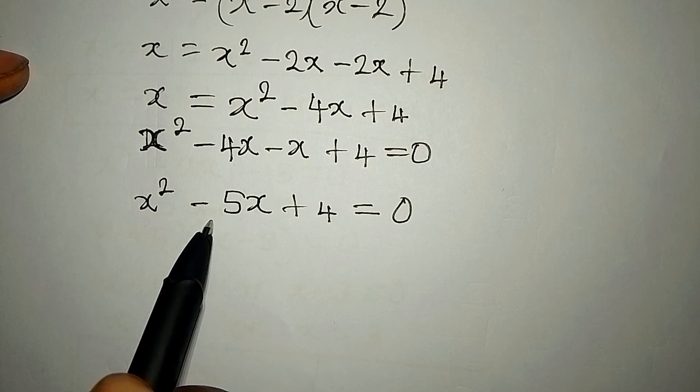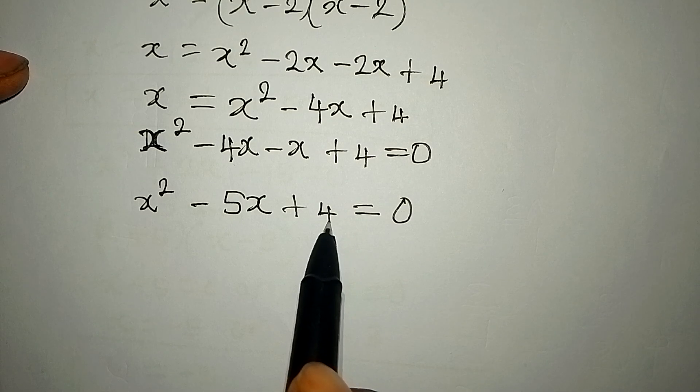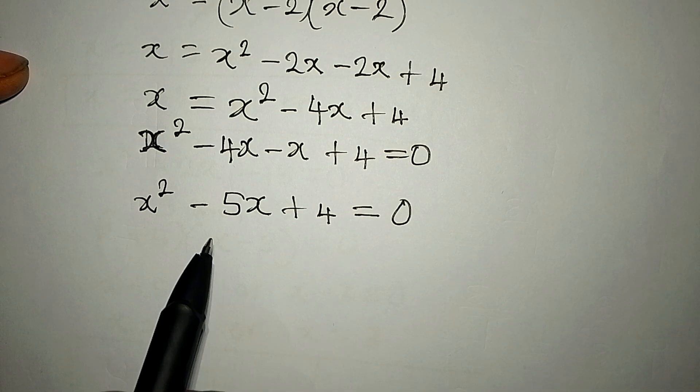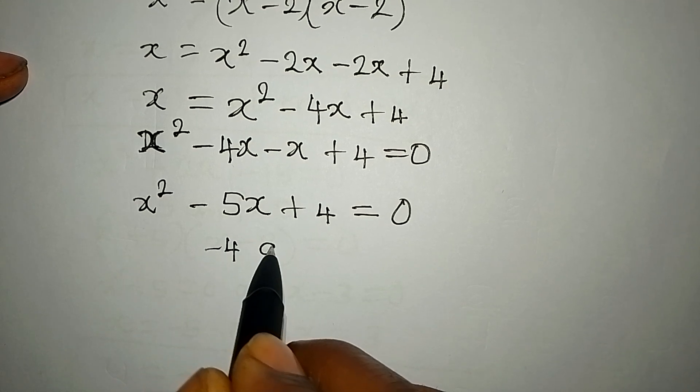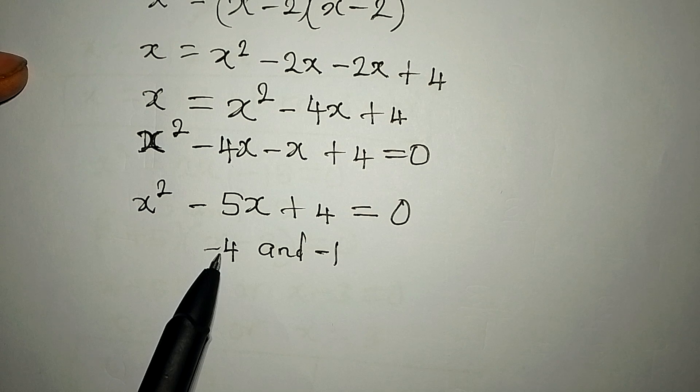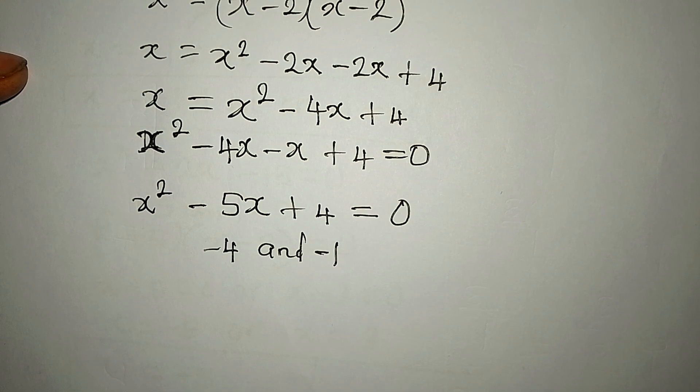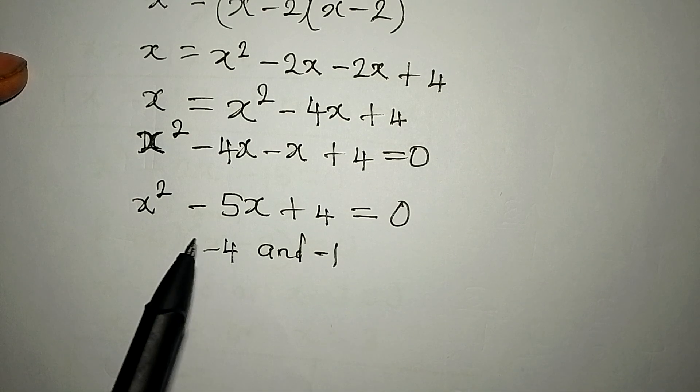So we have minus 5x and 4. What two numbers do you multiply to get plus 4 and add together to get minus 5? The two numbers will be minus 4 and minus 1. Because minus 4 times minus 1 will give us plus 4, and minus 4 plus minus 1 will give us minus 5.